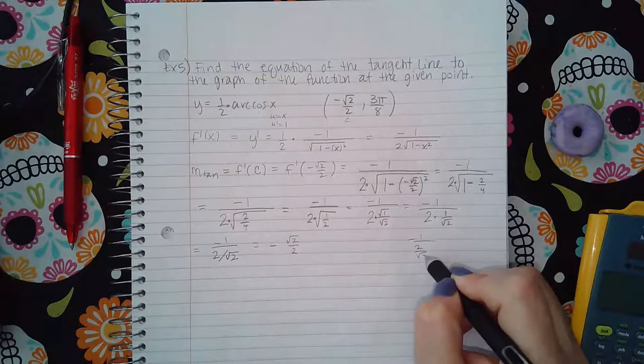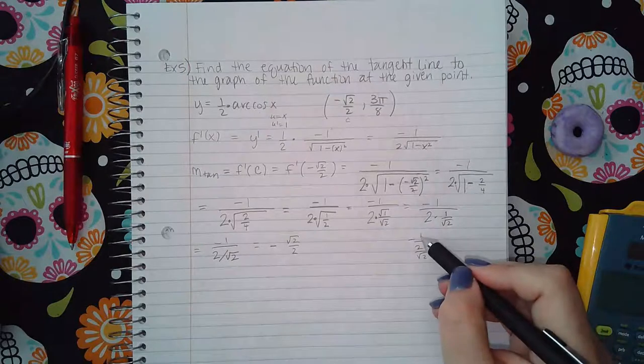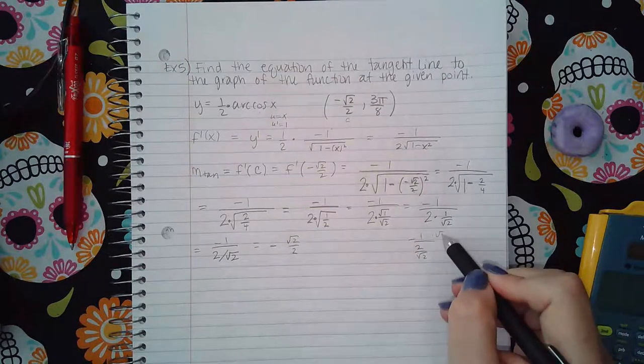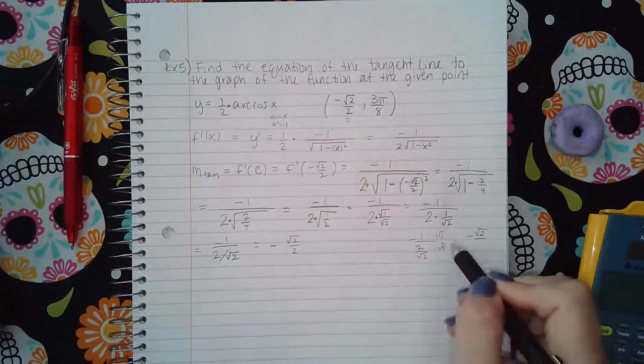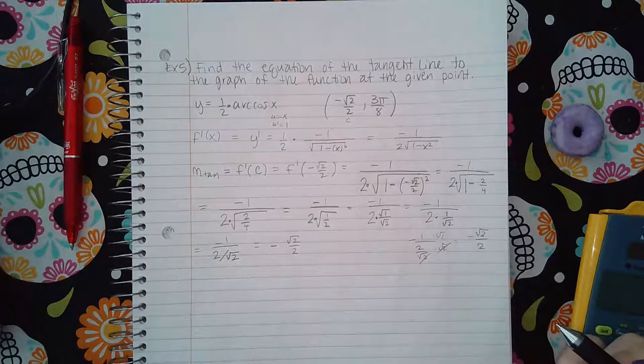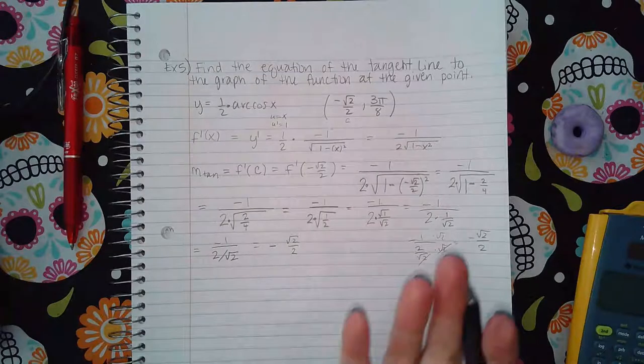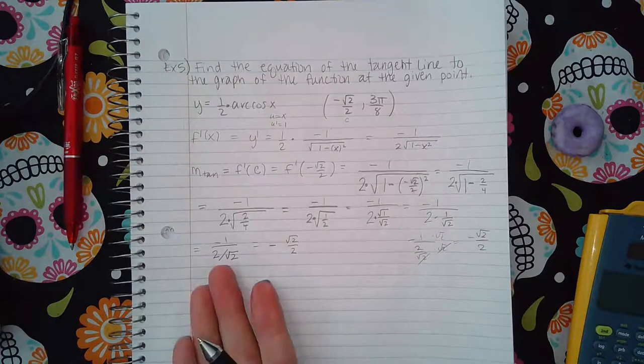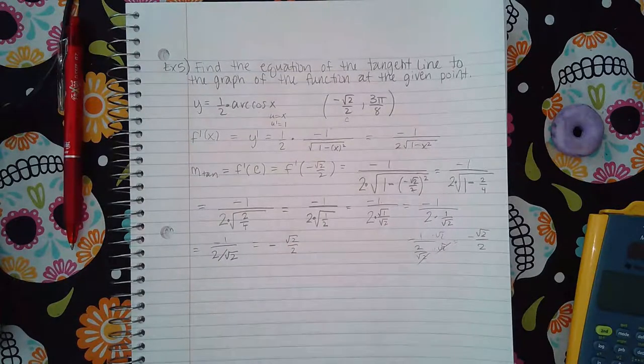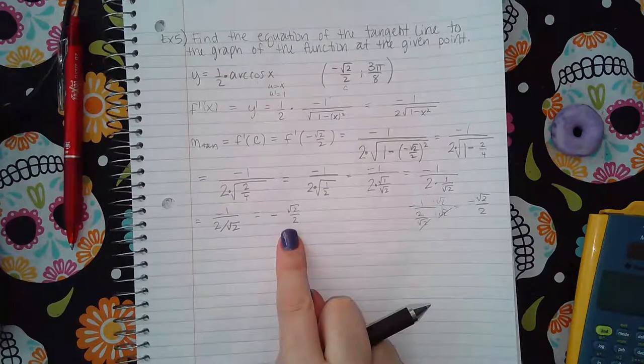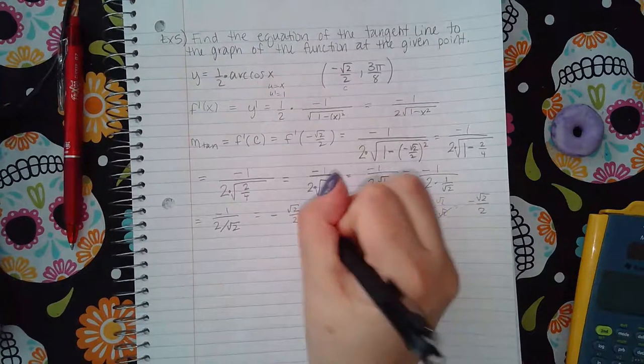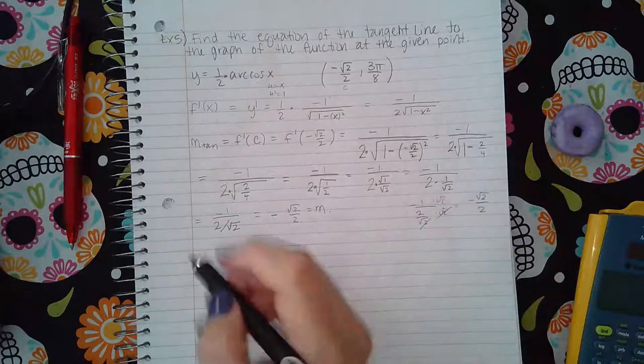So this is the square root of two over two. Another thing you could have done is if you take this, it's a complex fraction, multiply by the common denominator on top and bottom and get negative square root of two over two either way. But you should know how to convert that complex fraction into a fraction.